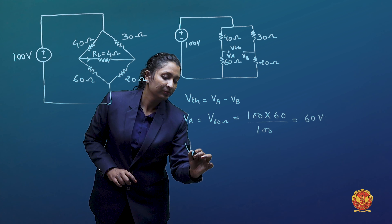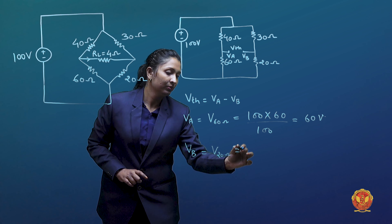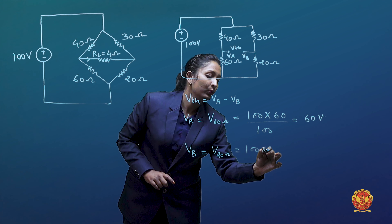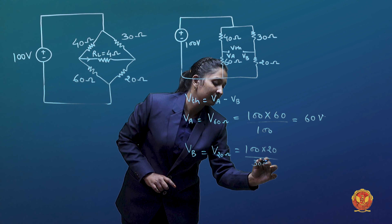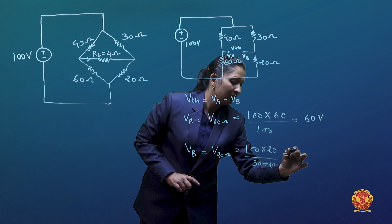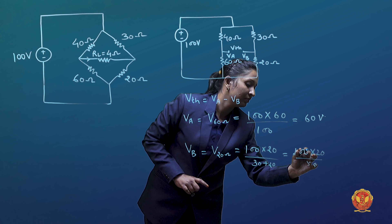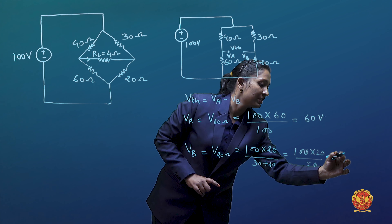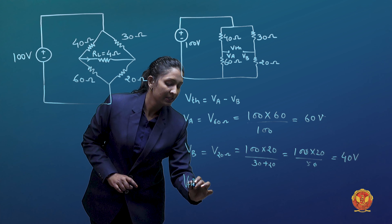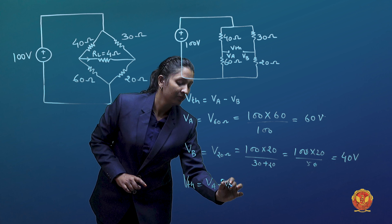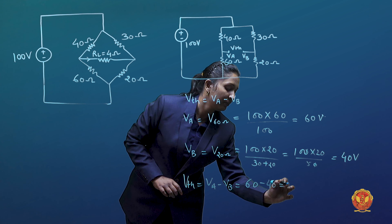What is Vb? Vb is equal to the voltage across the 20 ohm resistance, which is equal to 100 multiplied by 20 divided by 30 plus 20, which is equal to 100 multiplied by 20 divided by 50, which is equal to 40 volts. So Vth is equal to Va minus Vb, which is 60 minus 40, equal to 20 volts.